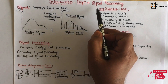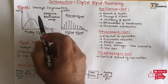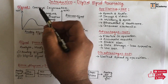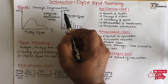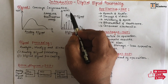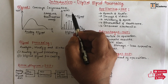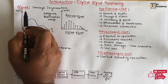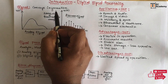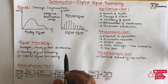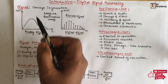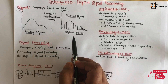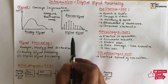First, let us understand what is a signal. A signal is one that conveys information by means of gesture, action or sound. Signal is used to convey information. Signal can be classified into two types: analog signal and digital signal.